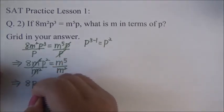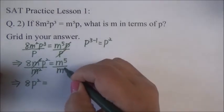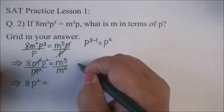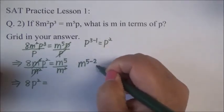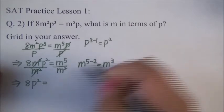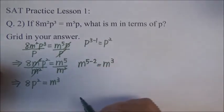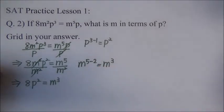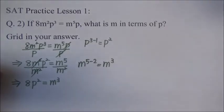And then, 8P squared is equal to M to the 5th power divided by M squared is the same thing as this one. So, M5 minus 2 is equal to M to the 3rd power. And now, this is not done yet because we have to make exponent here 1.